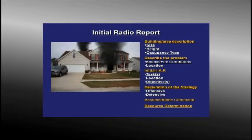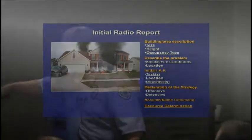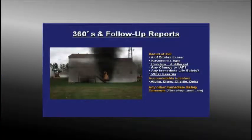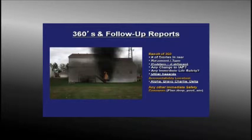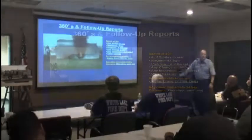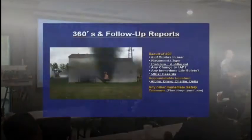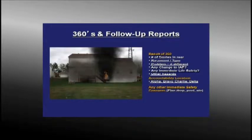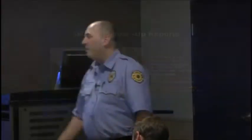Here's an example: Engine 1 on scene of a medium two-story residential with smoke showing, working fire on the first floor. Engine 1 taking a hand line through the A-side for fire attack, search and rescue. Offensive strategy, engine 1 has command, upgrade to box alarm. After the 360, I discovered it's actually a basement fire. Report: 360 complete, standard basement, working fire in the basement — engine 1 repositioning hand line to the Charlie side for exterior attack. Accountability on the A-side at engine 1. Then: dispatch, we're switching to fire ground, please monitor FD3.